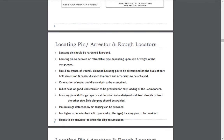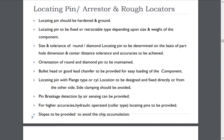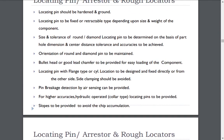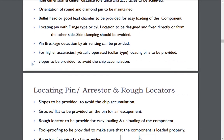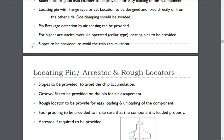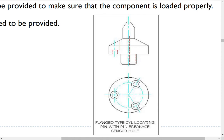Third element of fixture is locating pin or arrestor and rough locators. Locating pin should be hardened and ground. Locating pin to be fixed or retractable type depending upon size and weight of the component. Size and tolerance of round or diamond locating pin to be determined on the basis of part hole dimension and center distance tolerance and accuracies to be achieved. Orientation of round and diamond pin to be maintained. Bullet head or good lead chamfer to be provided for easy loading of the component. Locating pin with flange type or cylinder location to be designed and fixed directly or from the other side. Side clamping should be avoided.